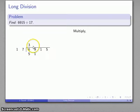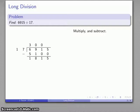Well now, really 3 times 17 is 51, but I shouldn't write the 51 here. I should be writing it way over here. And so what we're really doing is we're not multiplying 3 times 17 to get 51. We're actually multiplying 300 times 17 to get 5100, and that's what allows me to subtract here to get 1815 left over.